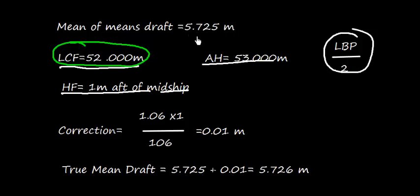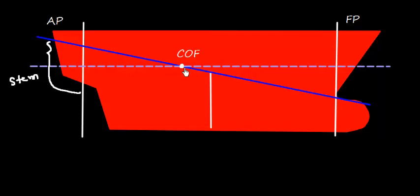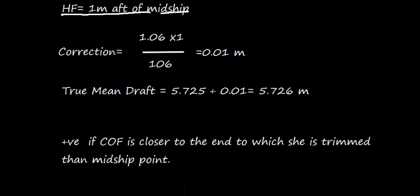The correction of 0.01 m is added because the vessel is trimmed by the stern and the center of flotation is closer to the aft end. The simple rule is: this correction is positive (added) if the center of flotation is closer to the end toward which the ship is trimmed. Since it is trimmed by the stern and the CoF is closer to aft, the correction is added to the mid-draft to obtain the draft at the center of flotation.